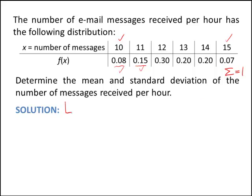So the notation is expected value of x. And expected value of x really is just a weighted sum of the x values. 10 occurs 8% of the time, 11 occurs 15% of the time, 12 occurs 30% of the time. So the sum is really just a weighted average of the x values.